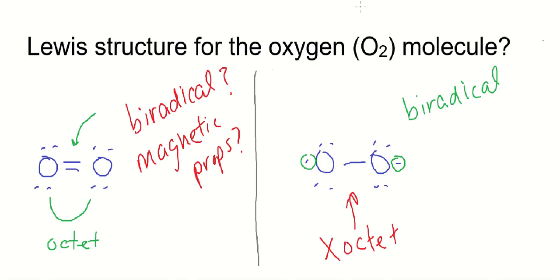All theories — all models — have limitations, and we see that oxygen is one of the limitations when you're using Lewis structures.